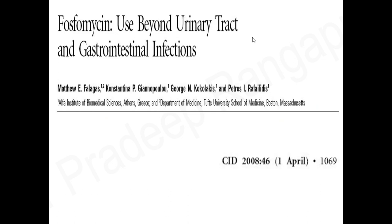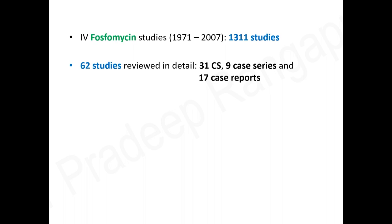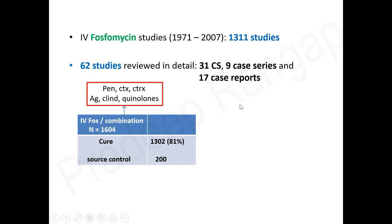The title of one article highlights use beyond urinary tract and GI infections. Looking at IV phosphomycin, this molecule has been available since 1971. There are 1,311 studies done on phosphomycin so far — it is not an entirely new molecule. Among these, 62 studies reviewed the molecule in detail, including 31 cohort studies, 9 case series, and 17 case reports.